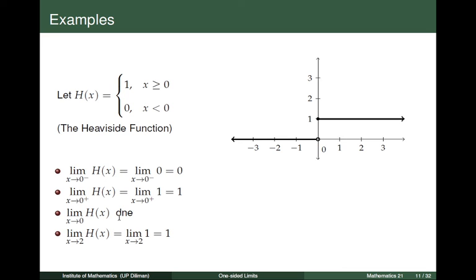Now let us consider the limit of h(x) as x tends to 2. x equals 2 is here on the graph. When we look at the Heaviside function at this part of the graph, we see that we don't need to distinguish the right side of 2 from the left side of 2 because the functional value is always 1. On the right side of 2 and on the left side of 2, the trend is the same. So the limit of 1 as x tends to 2 is equal to 1.